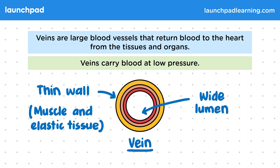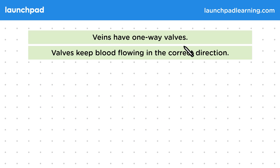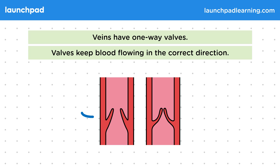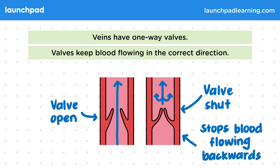So what else distinguishes veins from arteries? Veins have one-way valves. Valves keep blood flowing in the correct direction. This diagram of a vein on the left shows a valve that's open, which allows blood to move through. In this diagram of a vein on the right, the valve is shut. When the valve is shut like this, it stops blood from flowing backwards through the vein. This maintains a one-way flow of blood through this vessel. Just know that their job is to keep blood flowing in the correct direction.